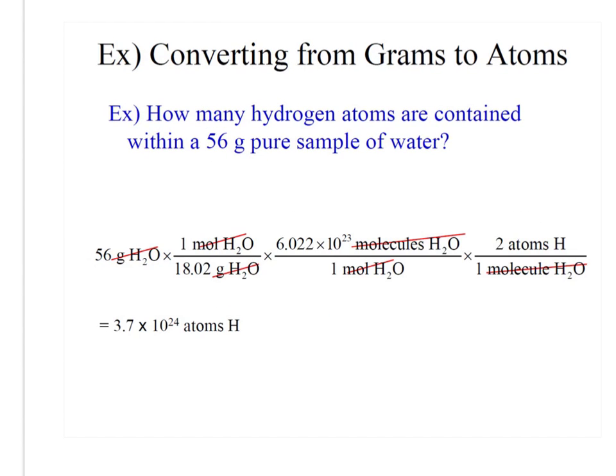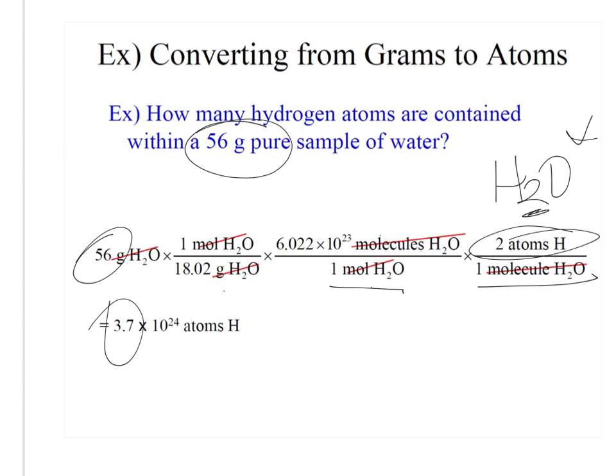How many hydrogen atoms are contained within a 56 gram pure sample of water? So I start with what they give me, they gave me 56 grams in the problem, grams to moles using molar mass, moles to molecules using Avogadro's number, and then I know from the compound, for every two hydrogen atoms, there's one oxygen atom. So in one molecule water, there's two atoms of hydrogen. I have two sig figs, I need two sig figs.